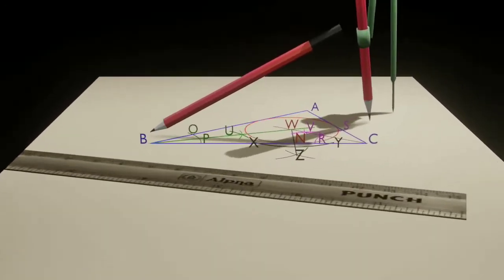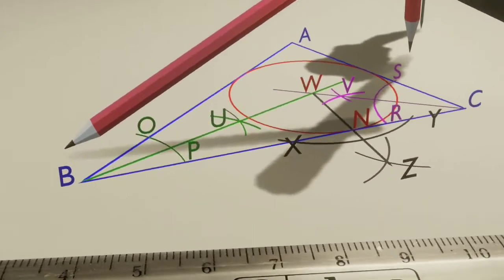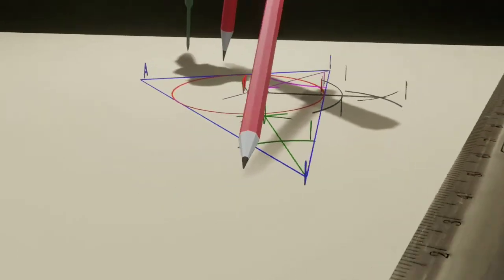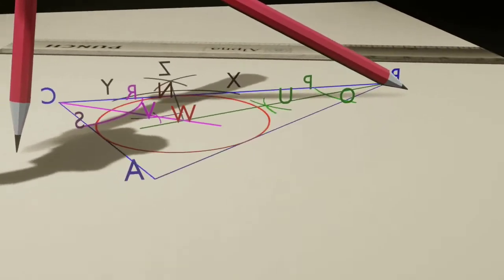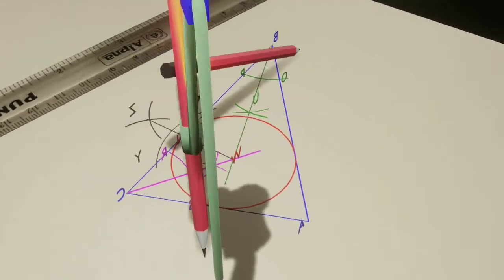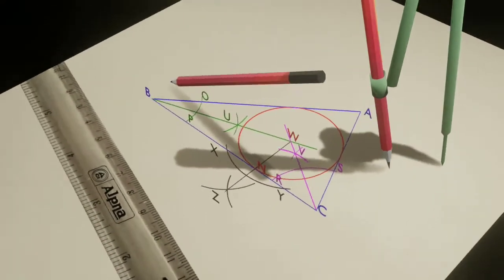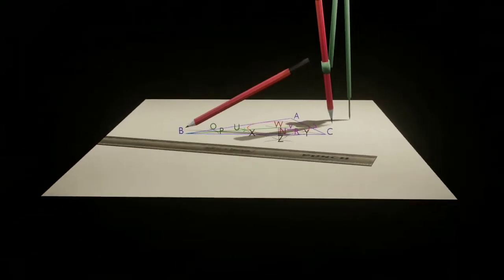How to construct an inscribed circle to a triangle - it is an important geometry construction at school level mathematics. In this animation video we are going to learn the total procedure. Remember, at school level examination, generally a construction problem may consist of two separate stages.